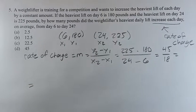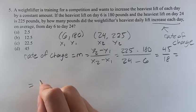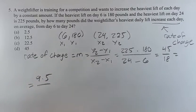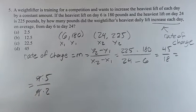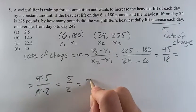If you don't want to do some complicated division, what you can notice is that 45 is 9 times 5, and 18 is 9 times 2. So if you cancel out the nines, you get 5 over 2, which is equal to 2.5.